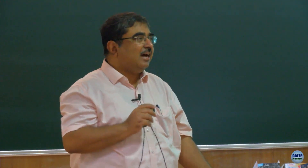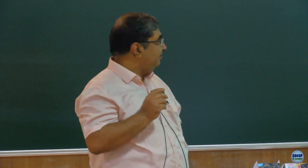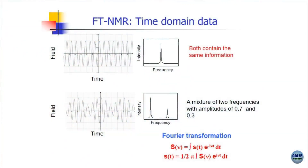What we will try to learn is how FTNMR works. In FTNMR you record the data in the time domain. If it is monochromatic radiation you get a sine wave or cosine wave; if it is polychromatic radiation you get a beating pattern — an interferogram. Then using Fourier transformation you can switch from time domain to frequency domain with no trouble at all; in fact it happens at the click of a mouse.